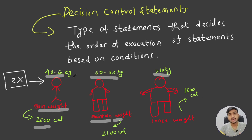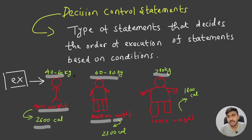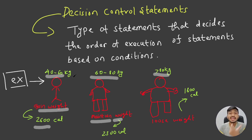Now focus on my statements. If your weight is between 40 to 60 kg — this is my condition. If this condition is true, then you should eat 2600 calories per day. If your weight is between 60 to 80 kg, then you should eat 2300 calories per day. And if your weight is greater than 80 kg, then you should eat 1800 calories per day. So these weight ranges are our conditions, and based on the conditions we are deciding how many calories to eat.